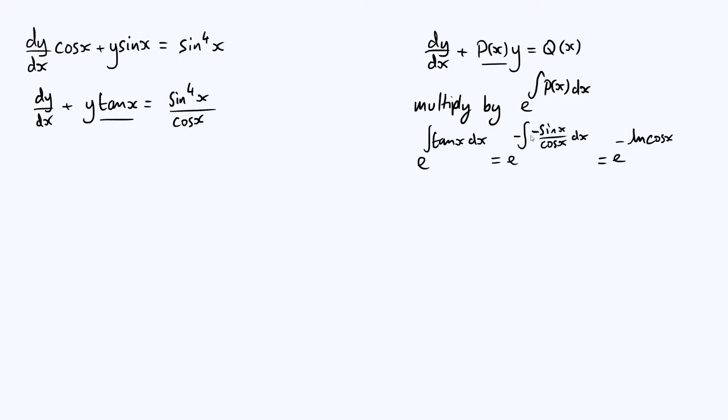If you have an integrand of the form f dash of x over f of x, in other words, if it's a derivative over the function itself, then you get the natural log of that function. Notice also that we can use a law of logs here. We can write that as e to the natural log of cos x to the minus 1. We take the pre-factor of minus 1, turn it into a power inside the argument. We can also write cos x to the minus 1 as 1 over cos x, that is just sec x. So e to the ln of sec x, which by definition of natural log is just sec x. That's our integrating factor.